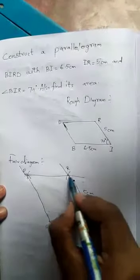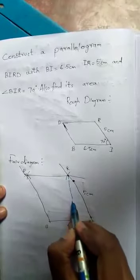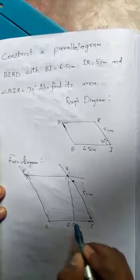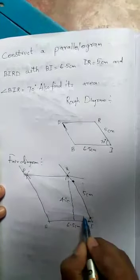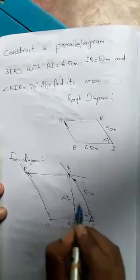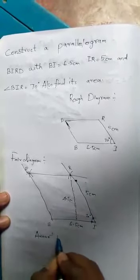Measure from B to R to I. The height is 4.7 cm for the area of the parallelogram.